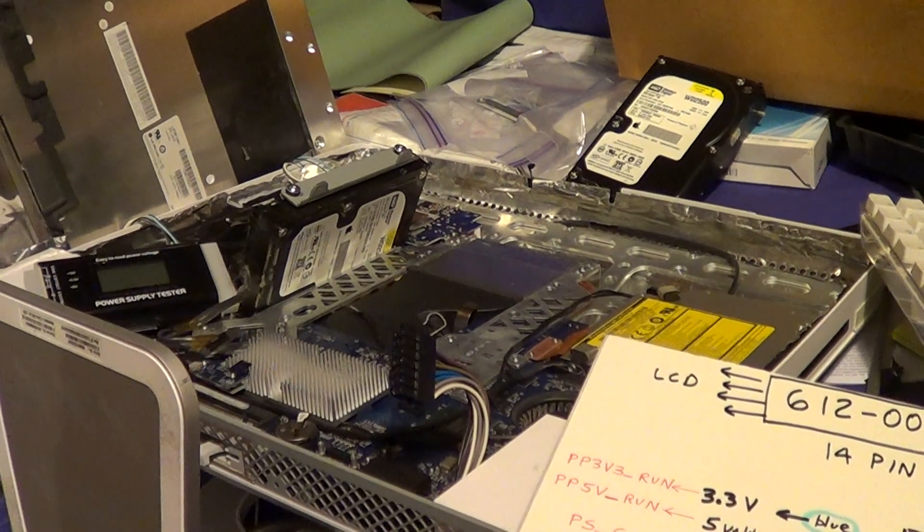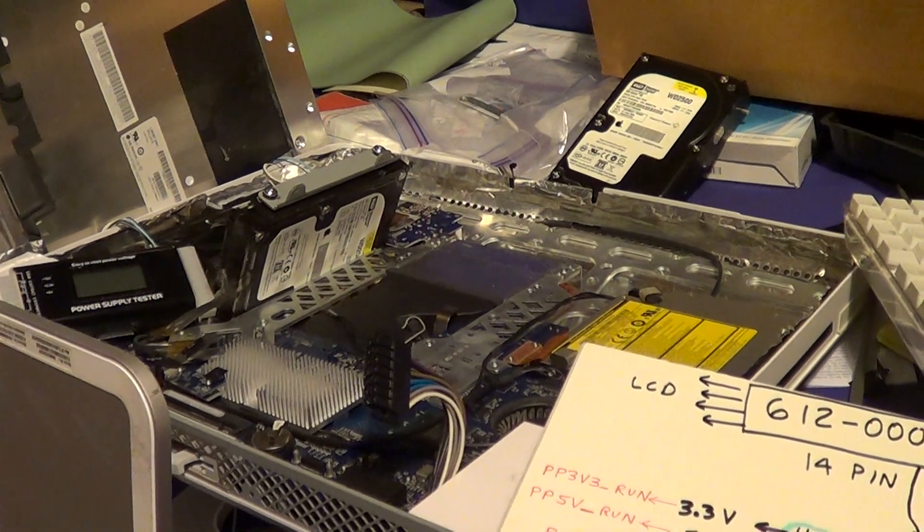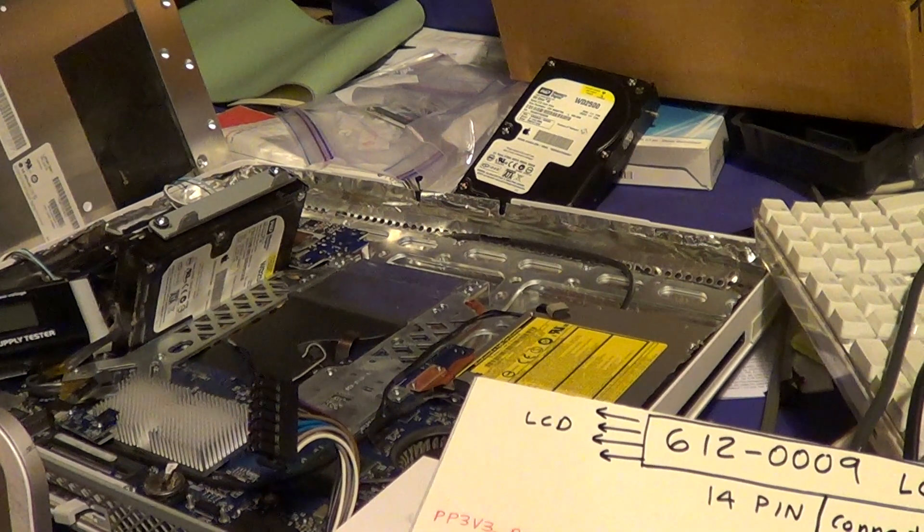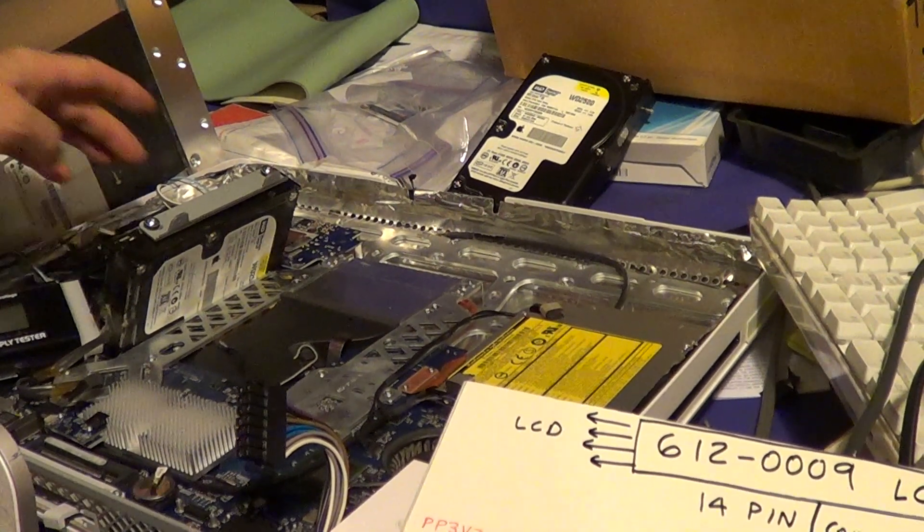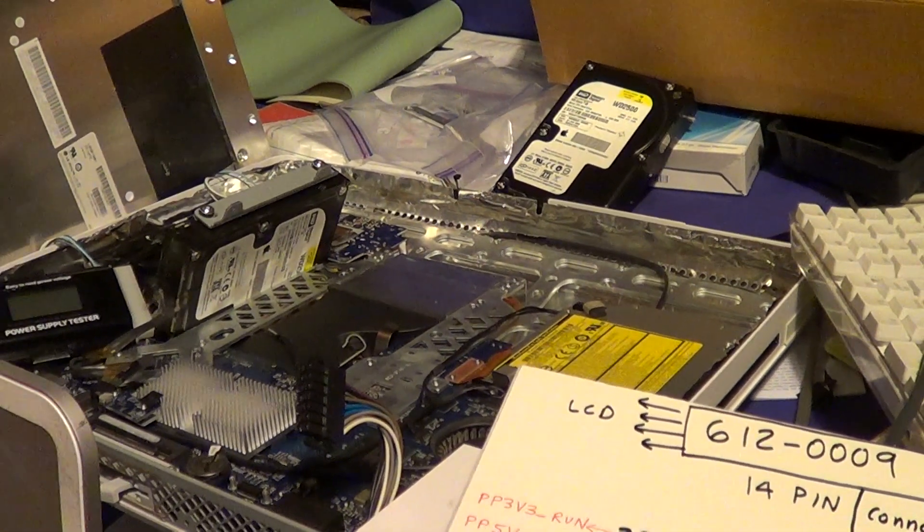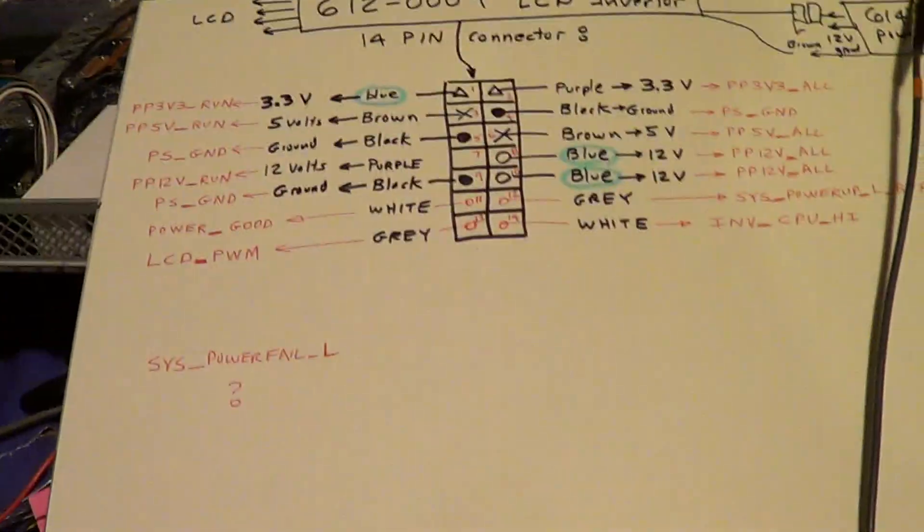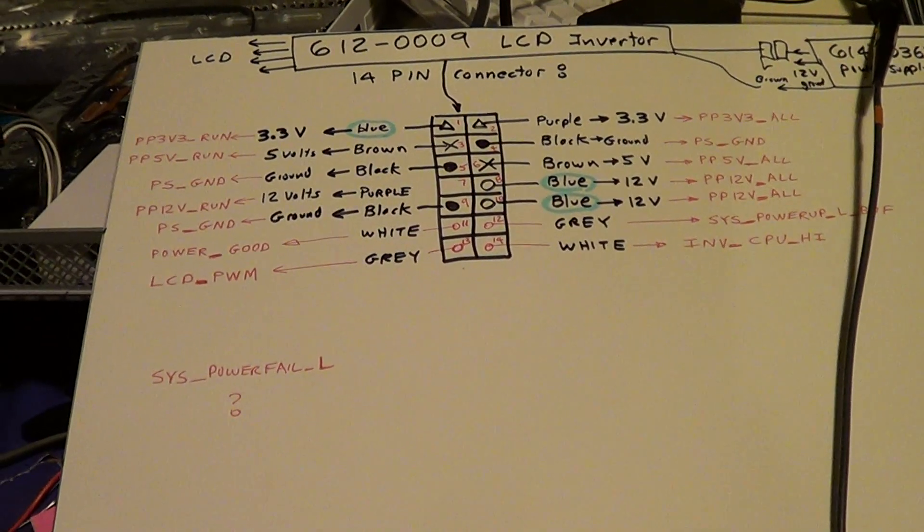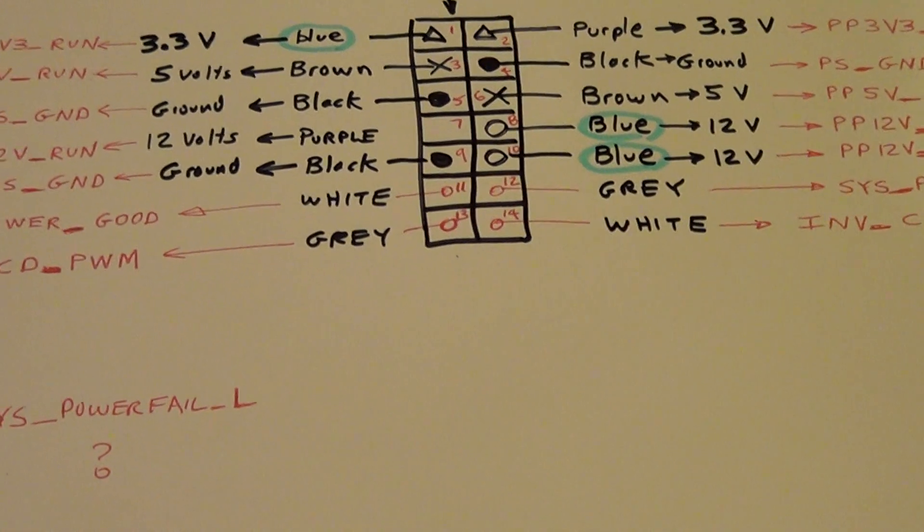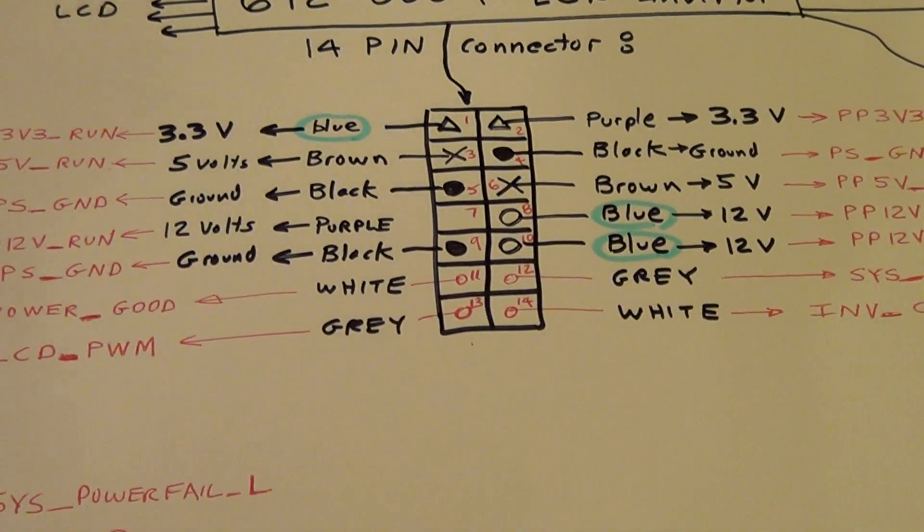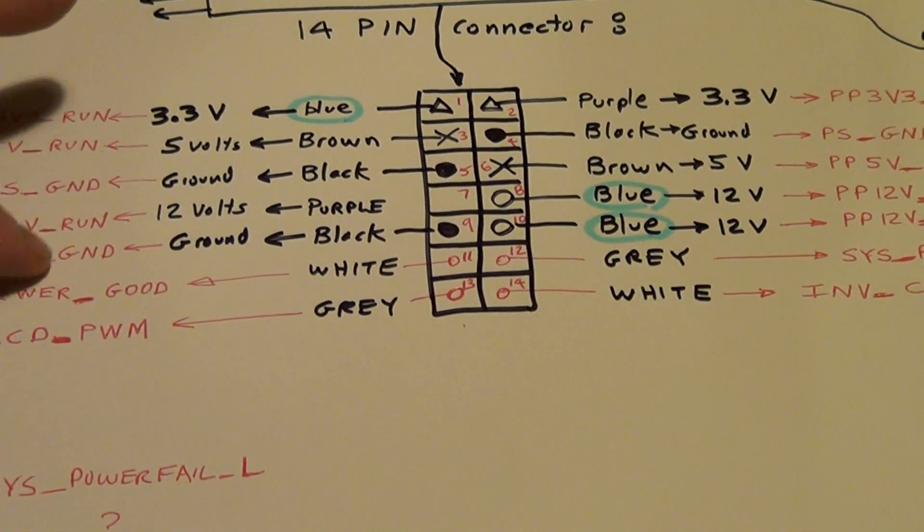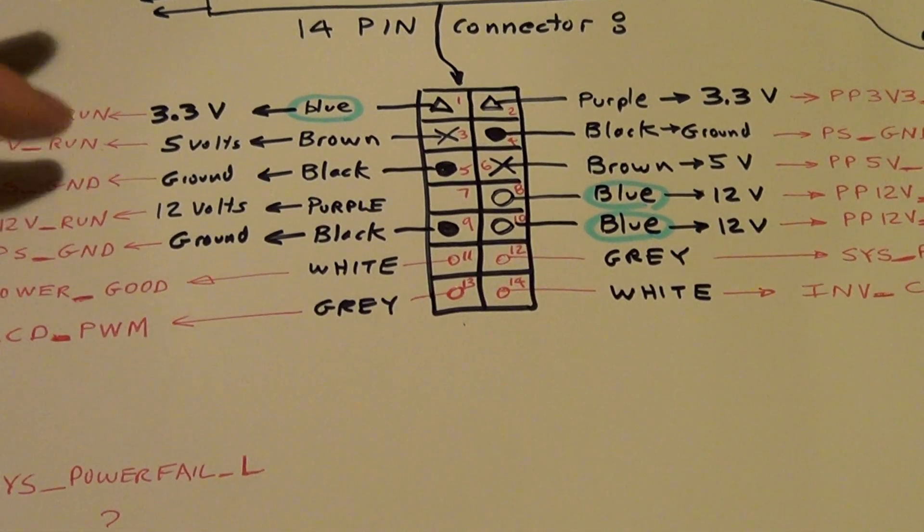This is an iMac early 2006 that's dead that I've been playing around with. I've been investigating how the power supply works and the inverter board and what the voltages are. This is what I've found on the 14 pin connector. Some other people on the web have listed some of these names.